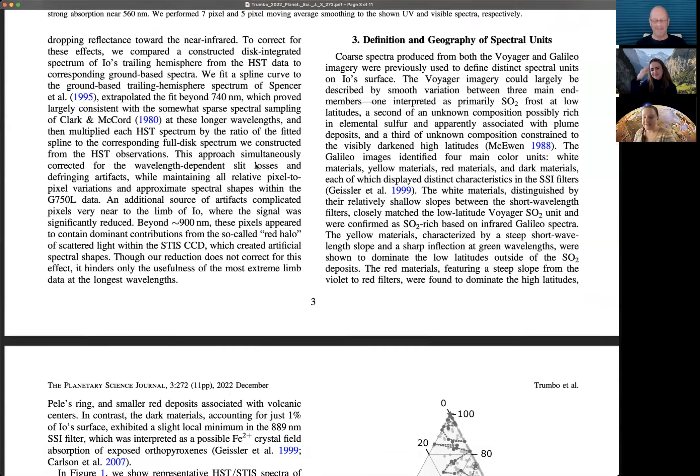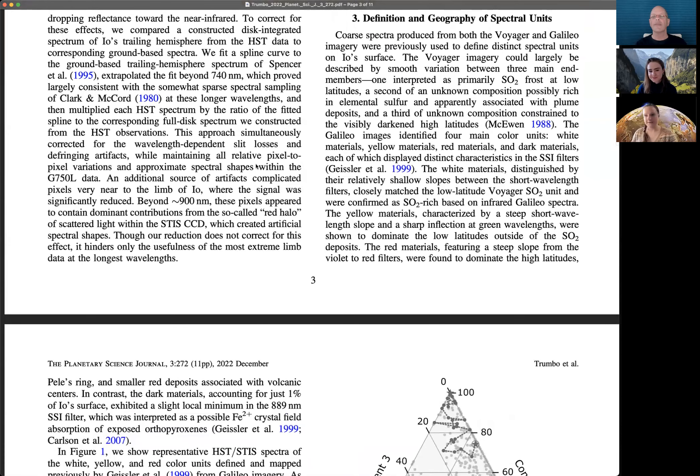All right, great. So as Samantha said, the idea here was to look at the spectra and say, can we divide this up into distinctive end members that are representative of potentially different compositions or compositional regimes across the surface of Io? The work that was done with Voyager and Galileo imagery had done this using the human eye and saying, can we see these visible colors and do we see anything distinctive in the spectra? We were curious to know if we did this in a statistical way without a lot of human input, are we going to come up with a similar answer or pull anything else out?